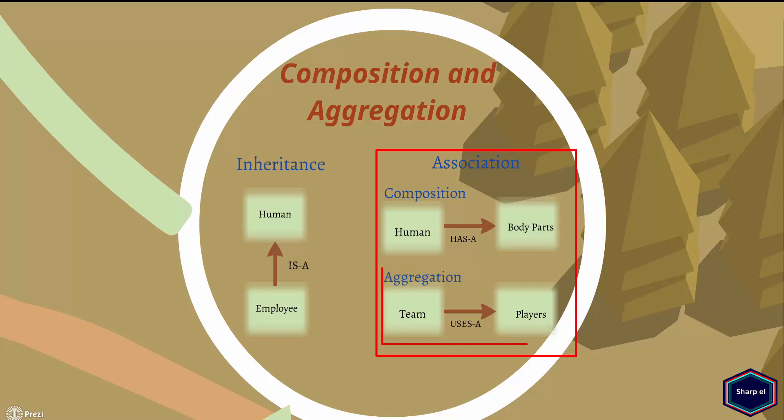Aggregation is a weak form of composition. If a container object is deleted, then all of its content objects can still exist without the container object. For example, you can think of a team which is a collection of players. But if you dissolve the team, the players can still exist. So when we talk about aggregation, we can also say it's some kind of uses relationship.